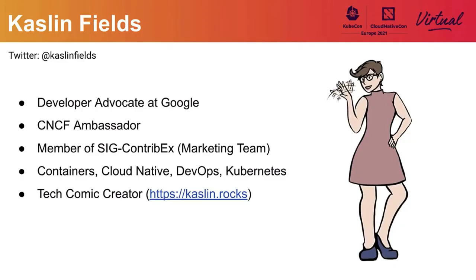Hi, I'm Kaslin Fields. And I'm going to tell you a little bit about my story of how I got started contributing to Kubernetes, and a little bit about how the upstream marketing team does our work. To start off, a bit more about myself: you can find me on Twitter at Kaslin Fields. I'm a developer advocate at Google, where I focus mainly on Google Kubernetes Engine. I'm also a Cloud Native Computing Foundation ambassador, a member of the SIG Contributor Experience marketing team. I focus mainly on containers, Cloud Native DevOps, and Kubernetes topics. And I also like to illustrate technical concepts — I have a little website where I do some comics to try to explain technical things.